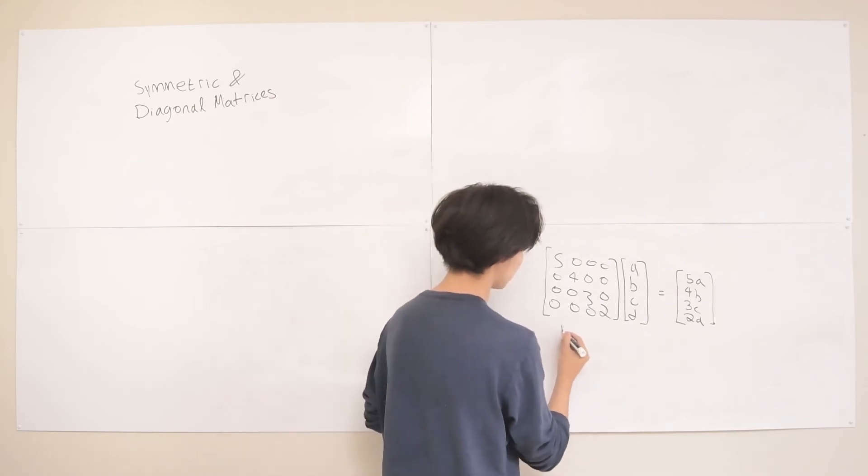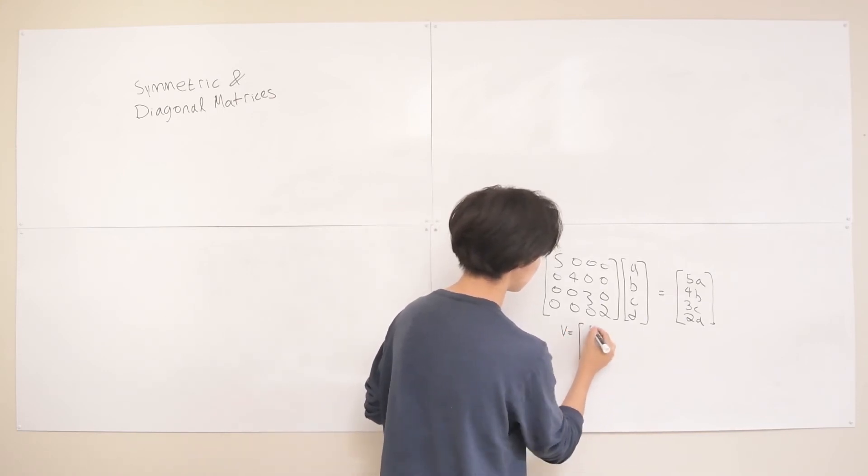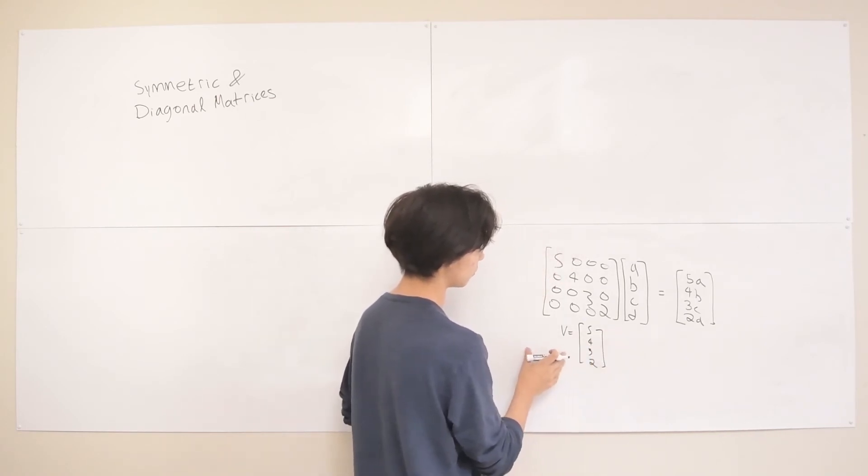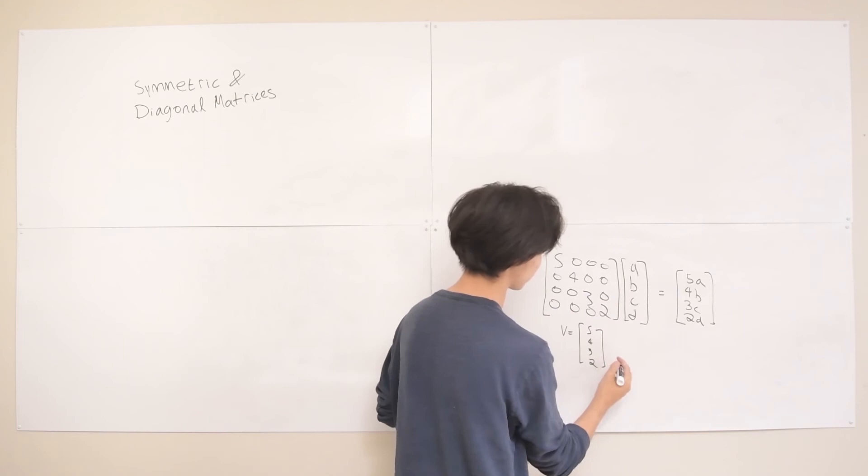If we define this vector again, V equals, say, 5, 4, 3, 2. You can imagine it's basically just taking the element-wise product between this vector V and this vector here.